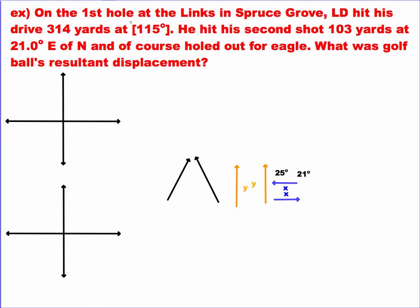So in the first hole of the Lynx in Spruce Grove, my home course, L.D. hit his drive 314 yards, not bad, at 115 degrees. Don't worry about the fact you've got a non-metric unit here. This is going to work exactly the same if you're doing a question with meters or kilometers or centimeters or yards. It doesn't matter. He hit his second shot 103 yards at 21 degrees east of north, and of course he holed out for eagle. That's pretty common for me. What was the golf ball's resultant displacement?